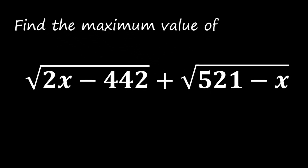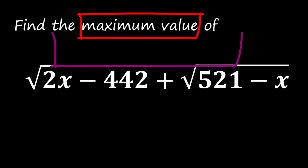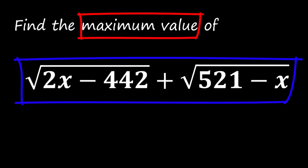Hello everyone. Today we got an intriguing math problem that's absolutely perfect for beginners. Here is the problem: find the maximum value of square root 2x minus 442 plus square root of 521 minus x.